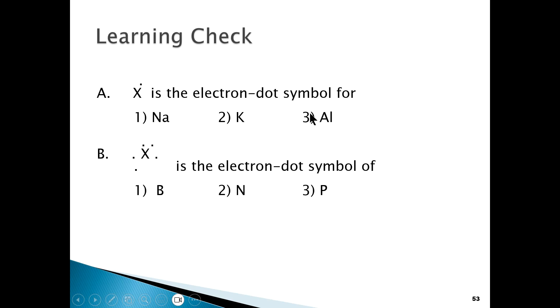Based on that, we can answer questions such as the ones that we see here. It says X with a dot here is the electron-dot symbol for, and it gives you three options. The question you have to ask yourself is what groups are these elements in? If you go to the periodic table, you'll see that of these three elements, only two of them are in group 1 and therefore would have one valence electron. So the answer would be sodium and potassium.